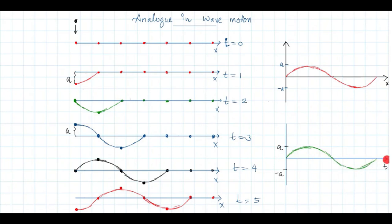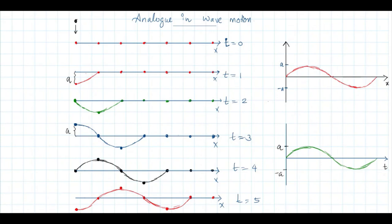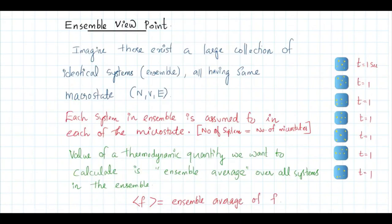Alternatively, concentrate on a single particle and observe it over a span of time — you see a sinusoidal motion plotted against time. In the first case the horizontal axis is position; in the second it is time. This is essentially the difference between the two viewpoints in statistical mechanics. The second viewpoint — fixing time and considering a large collection of identical systems — is called the ensemble viewpoint.